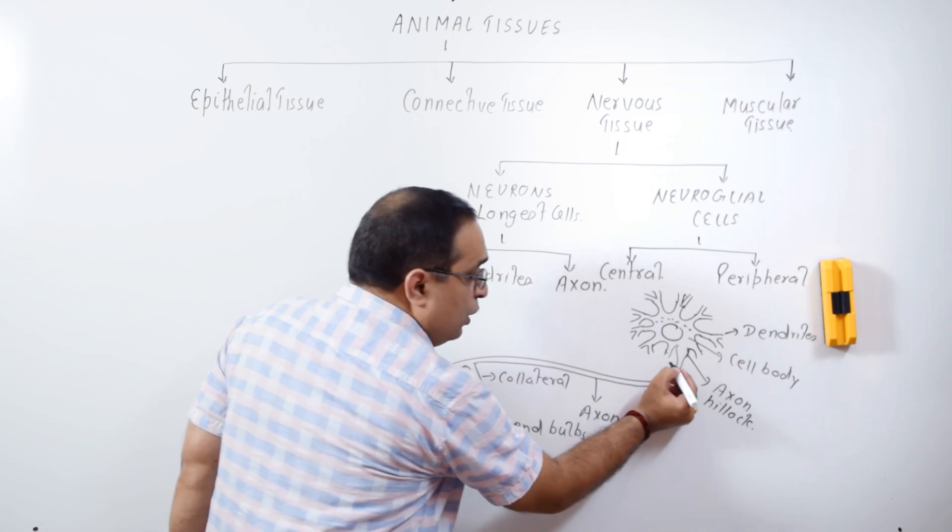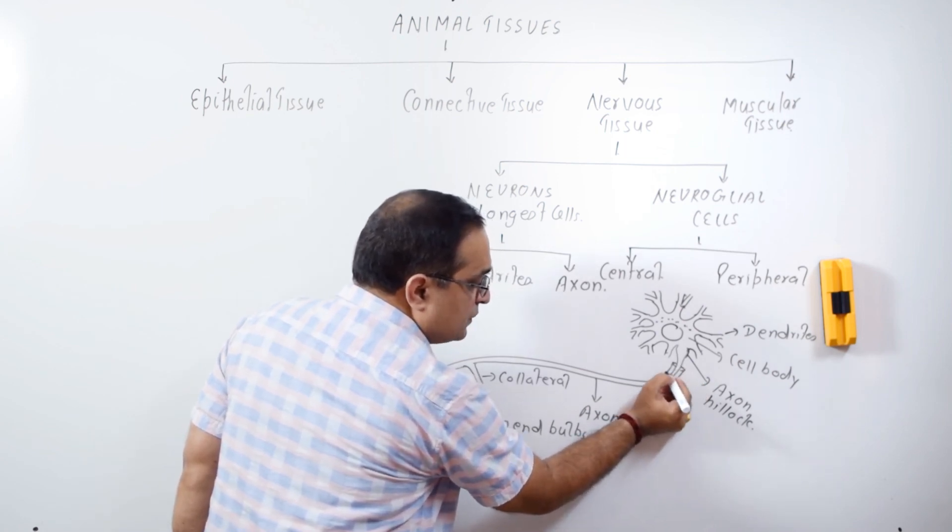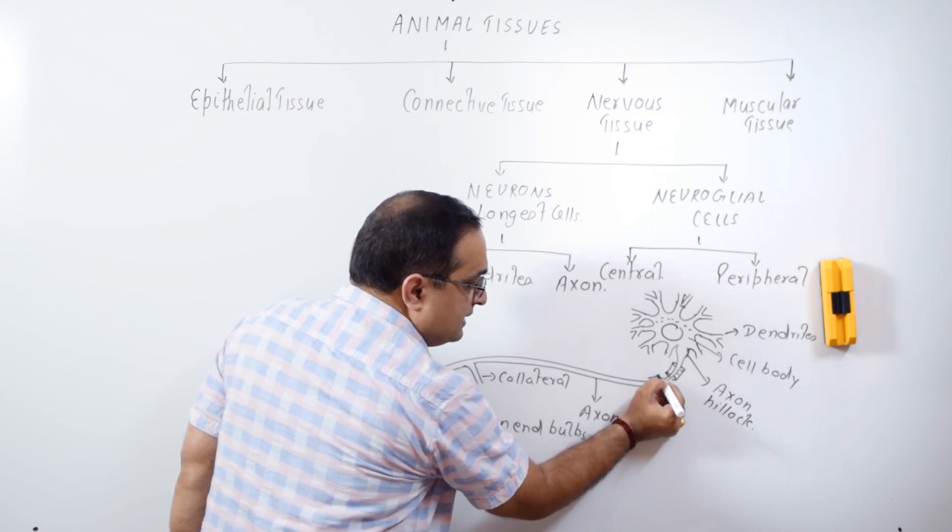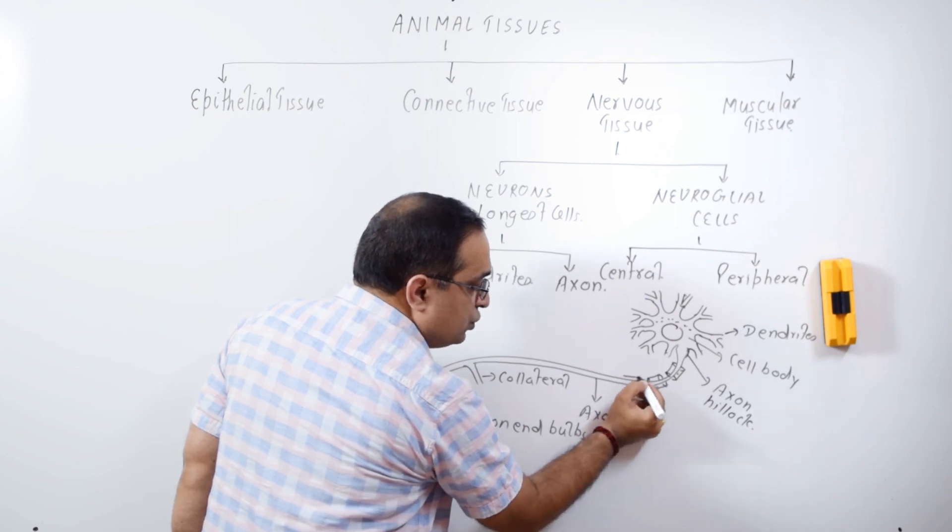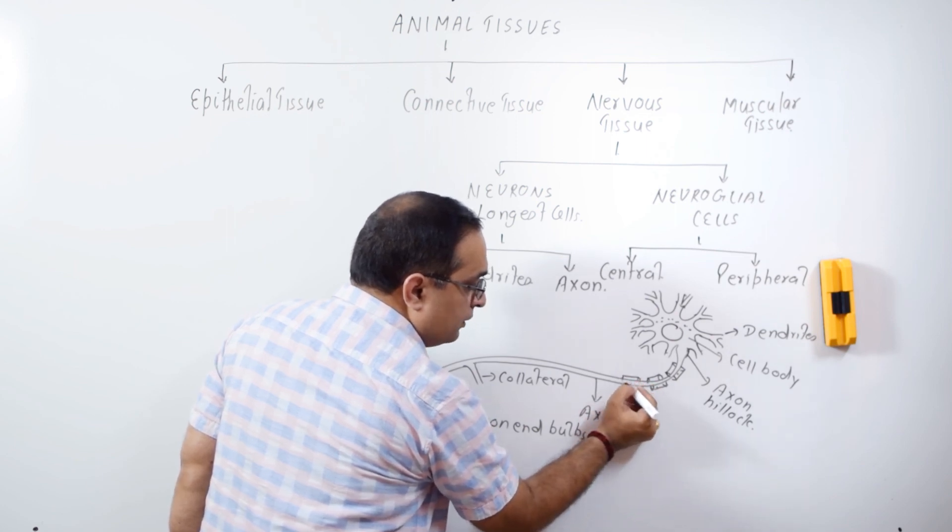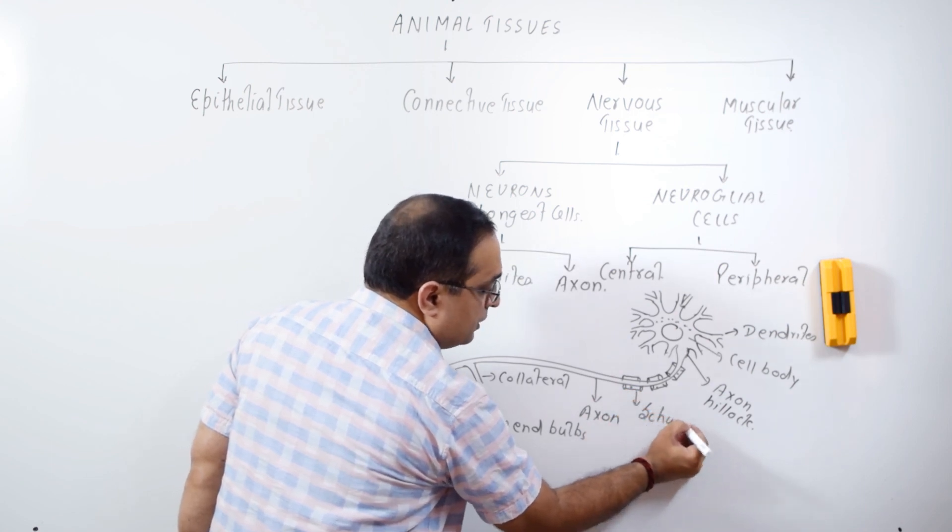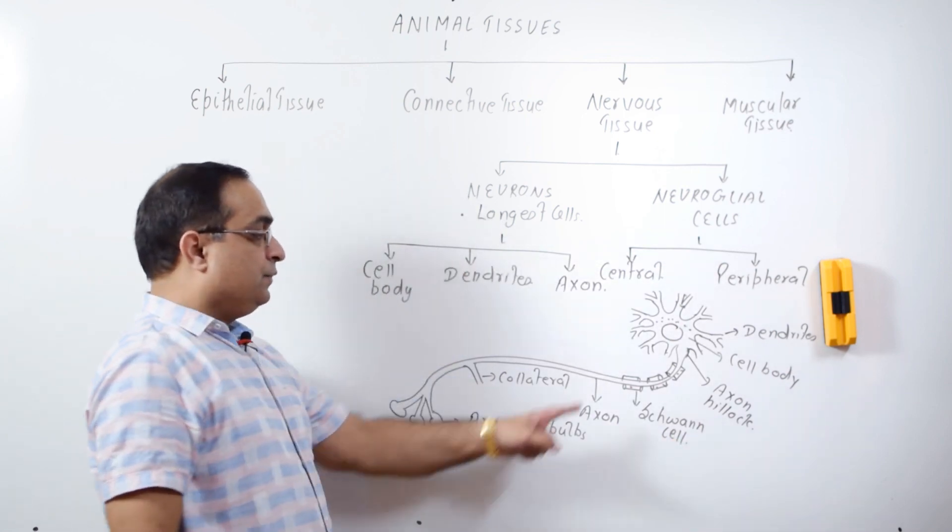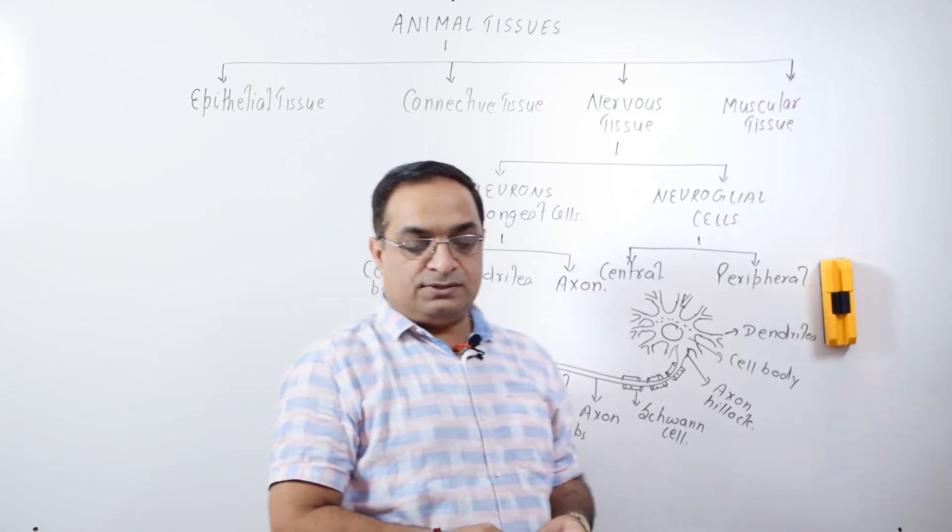An axon is covered by neuroglial cells called Schwann cells. You can see these cylindrical structures. These form myelin sheath around axon. Myelin sheath acts as an insulator. So, this cell is what? It is Schwann cell. Throughout the length of the axon, Schwann cells are present.